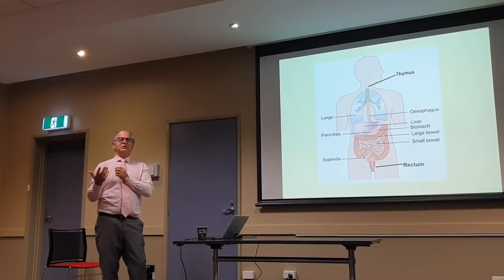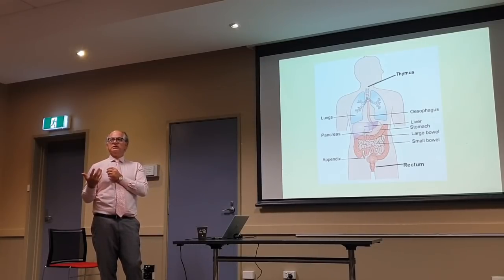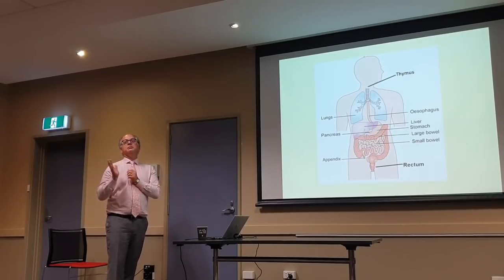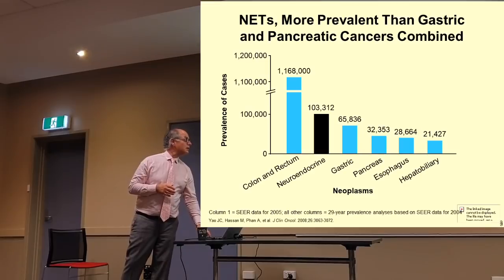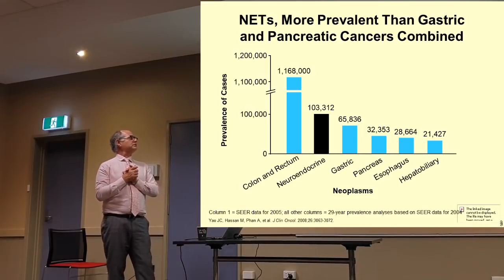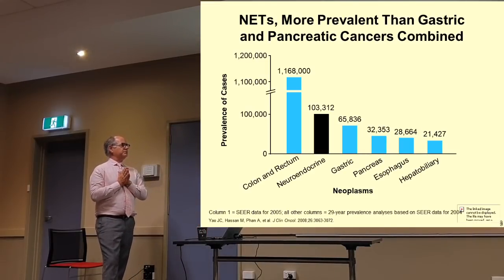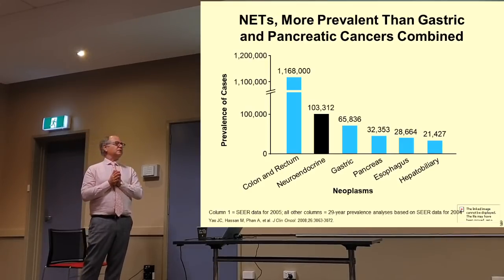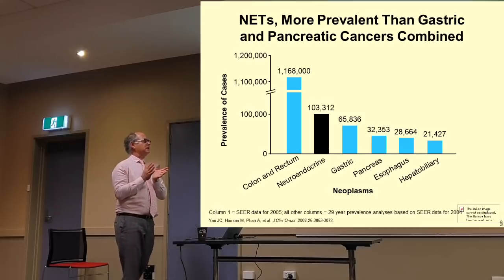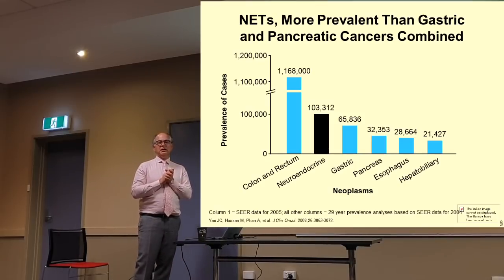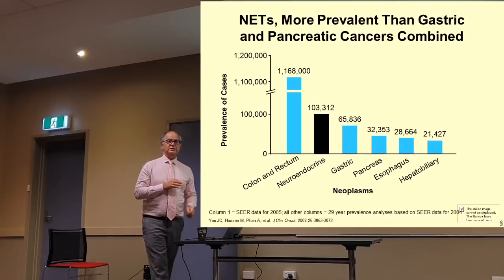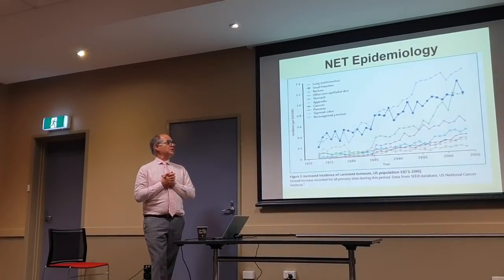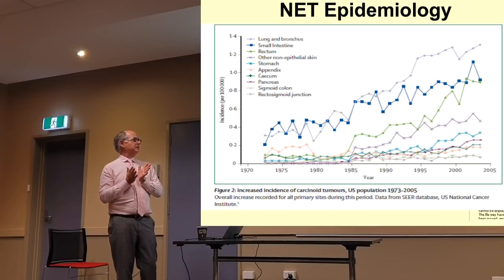A lot of them will cause symptoms because of local issues — because of pressure on organs, or because they spread to other parts of the body. They're increasing. If you look at total numbers, they're probably much more common than stomach cancer, pancreatic cancer, or esophageal cancer, even though they're supposed to be a rare tumour. We do know that the incidence is increasing.